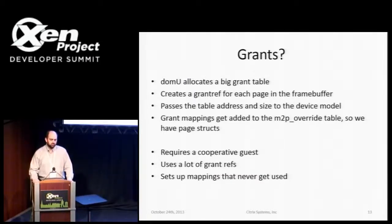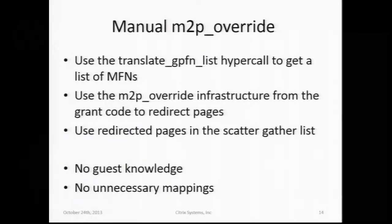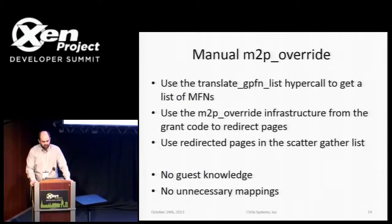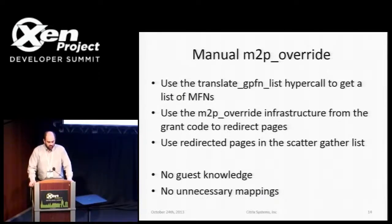So we can do a hybrid approach: skip setting up a foreign page mapping and just translate the guest GFNs using an existing hypercall, translate_gfn_list. You pass a list of the guest physical addresses of your linear frame buffer to Xen, it increases the reference count on all of them and hands you a list of machine addresses back. You then use just the M2P override section of the grant code to override some pages, give those pages to GEM, and you have no guest knowledge, no unnecessary mappings, but you do have page structures — and a nice GEM object representing your frame buffer.